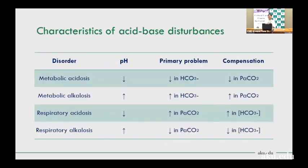The four common acid-base disorders in ICU practice: metabolic acidosis — pH decreased, primary problem is decreased bicarbonate, compensation is decreased CO2. Metabolic alkalosis — pH increased, primary problem is retained bicarbonate, compensation is increased CO2. Respiratory acidosis — pH decreased, primary problem is increased PCO2, compensation is increased bicarbonate. Respiratory alkalosis — pH increased due to hyperventilation blowing out CO2, compensation is decreased bicarbonate.